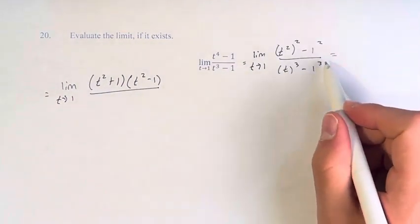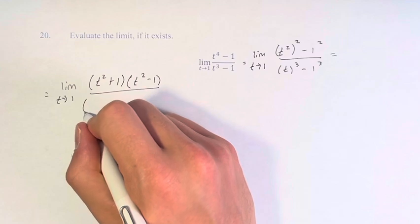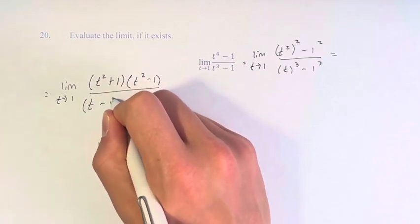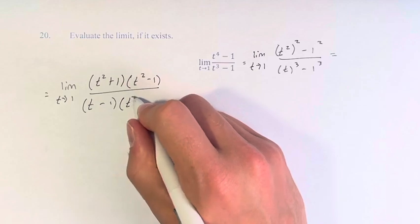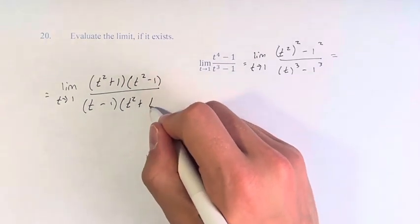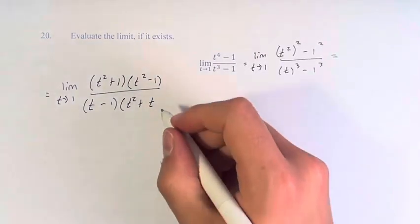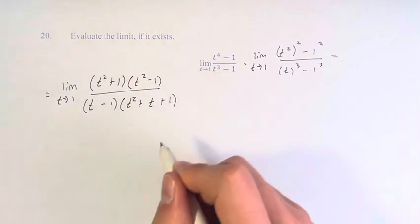With the difference of two cubes, you take their difference, so t minus 1. Then you take the square of the first one. Then you add their product, so 1 times t is just t. Then you take the square of the second one, which is 1.